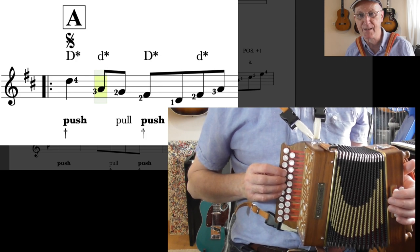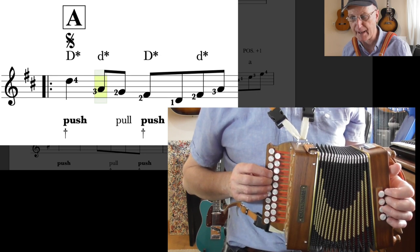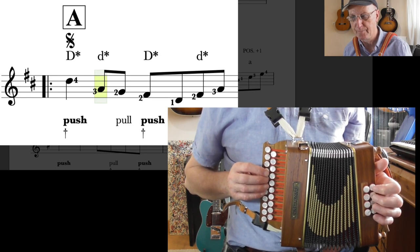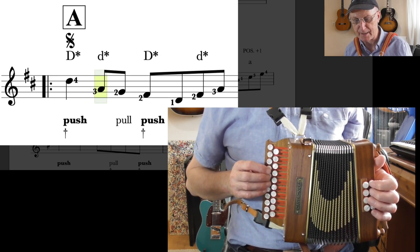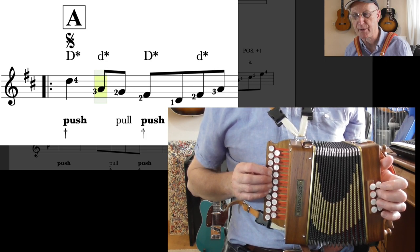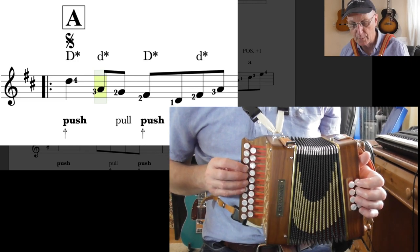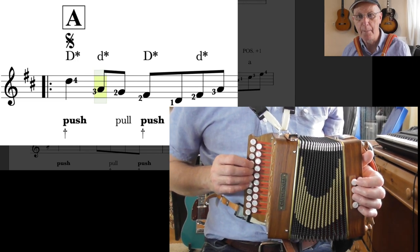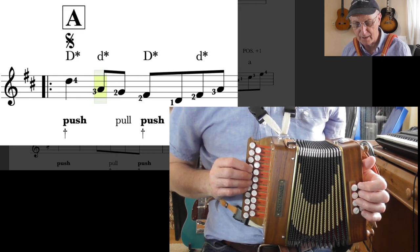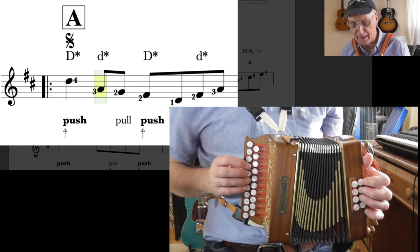Now the first bar had N.C. written above it, which means no chord. There's no left hand. But here, of course, we've got our D bass, D chord, D bass, D chord on the beat. So one, two, three, four. So when you play that G note on the pull, make sure you lift your bass chord off, otherwise you'll have an unwanted A chord.